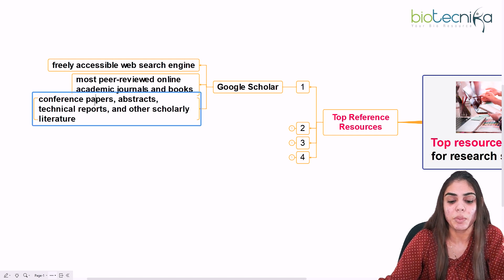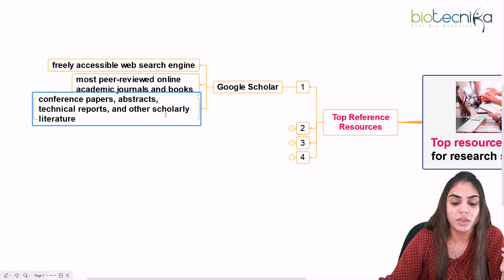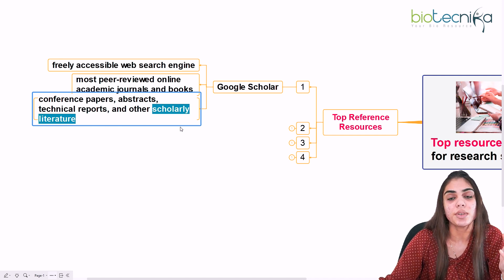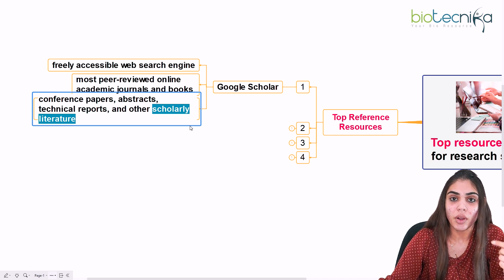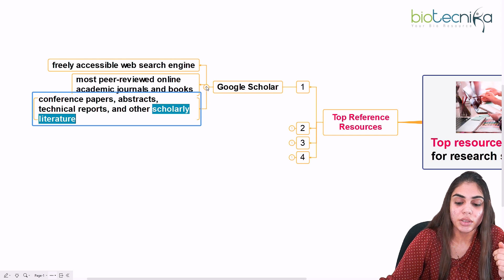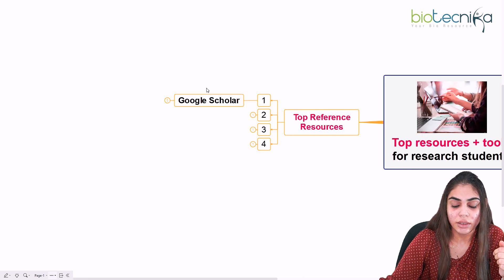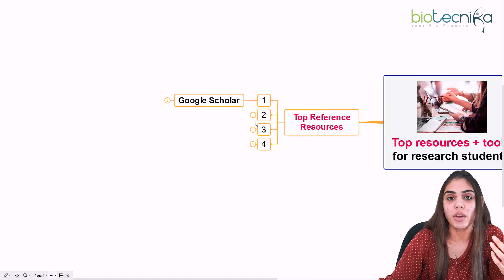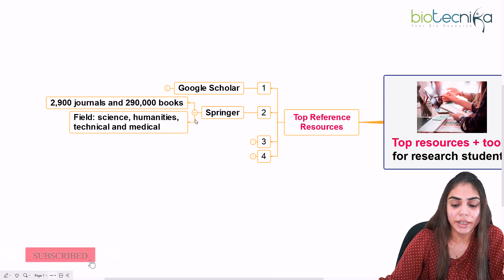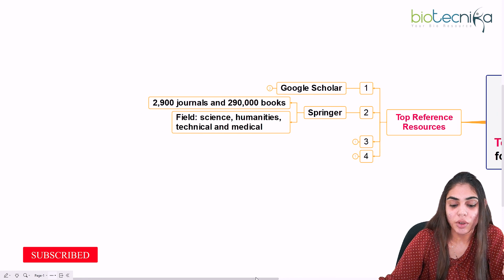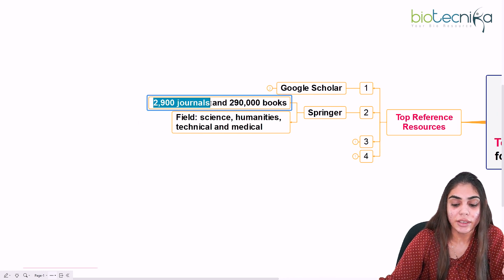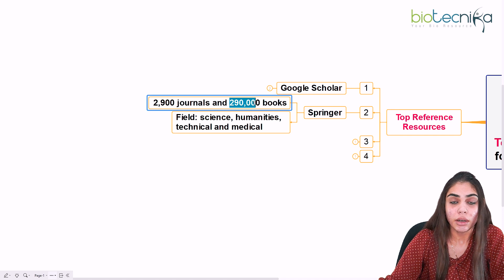With Google Scholar, you can search for conference papers, abstracts, technical reports, and other scholarly literature including review and research papers. If you are looking for any of these, just go to Google Scholar and search. This is one of the great ways to search references and material for your research.